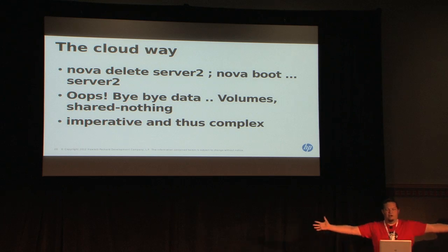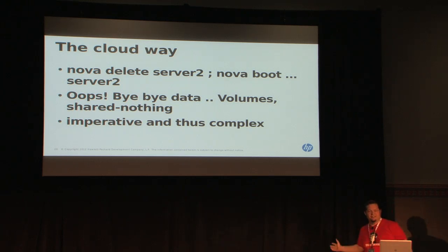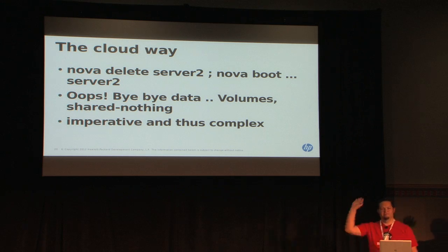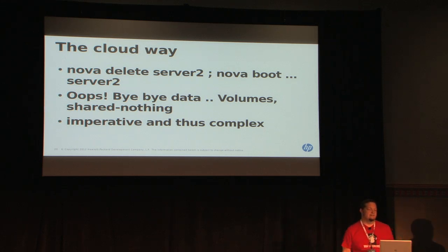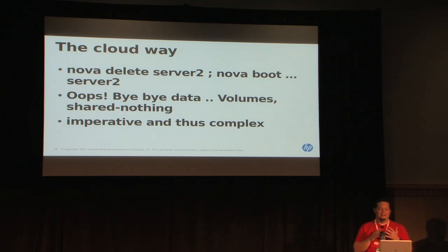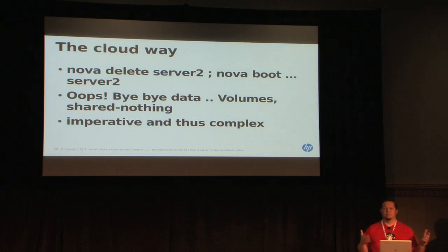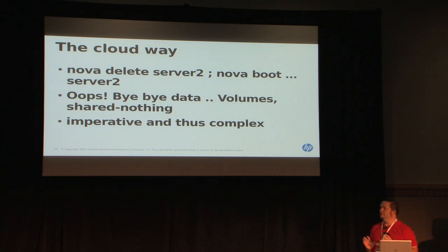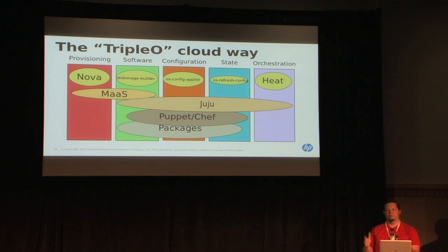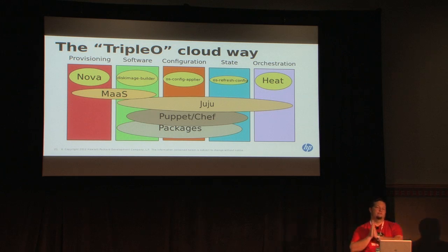The new cloud way is just delete server two — get rid of it, put a new one in. Unless you have data. The reaction to that is somewhat imperative right now because we just learned of this problem, we just discovered the cloud way, and it's thus very complex.